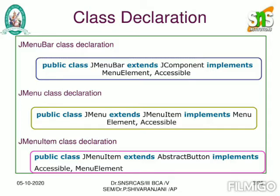The class declaration of JMenuBar uses the keyword public, meaning the class is accessible to all. The class name is JMenuBar and it extends JComponent, implementing MenuElement, which should be accessible. Similarly, you can define menus using a class. The second syntax specifies how to declare JMenu: public class JMenu extends JMenuItem implements MenuElement, and that MenuElement should be accessible to the user.